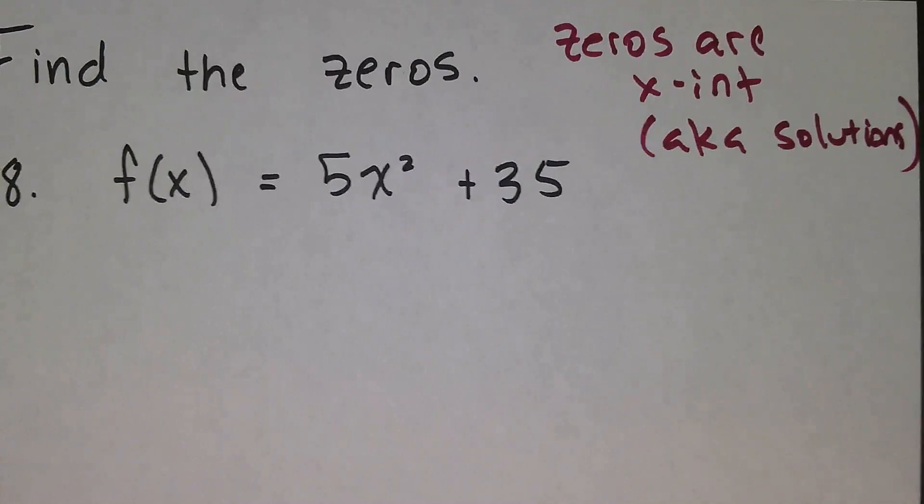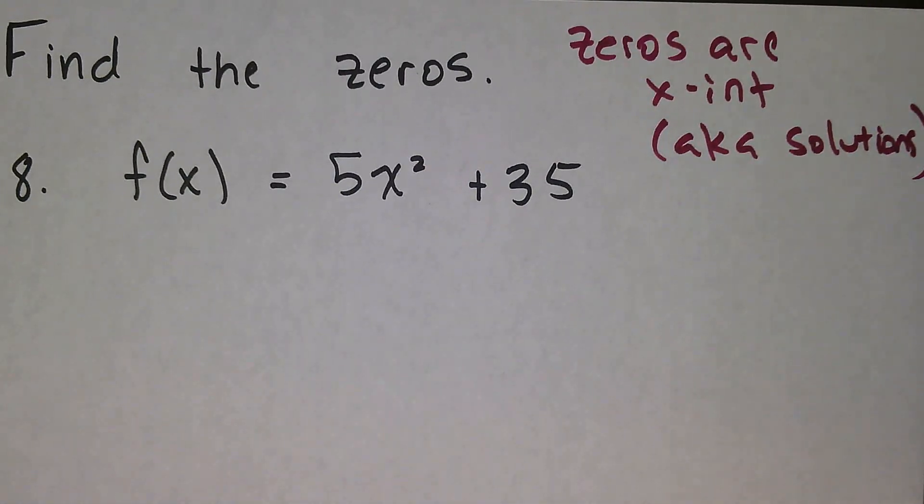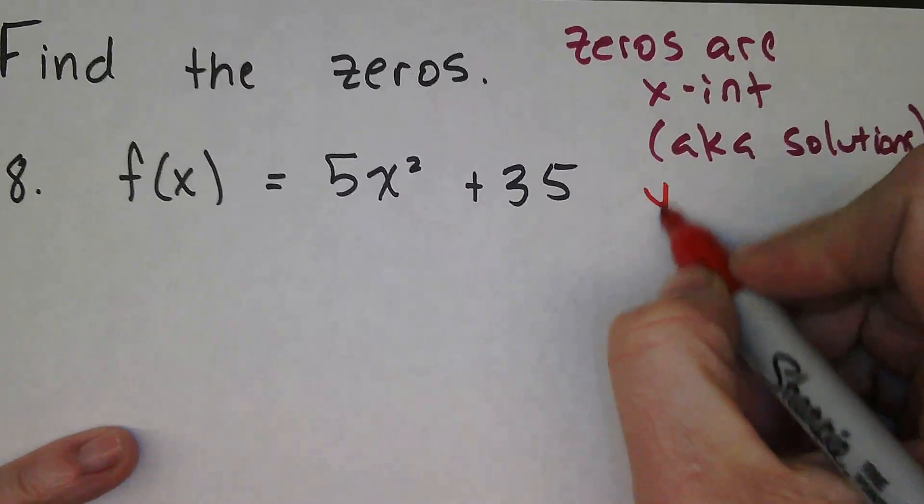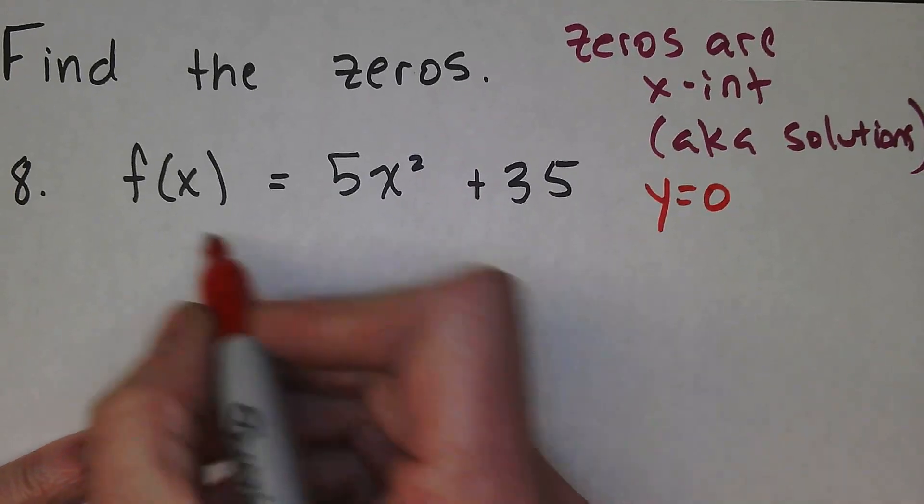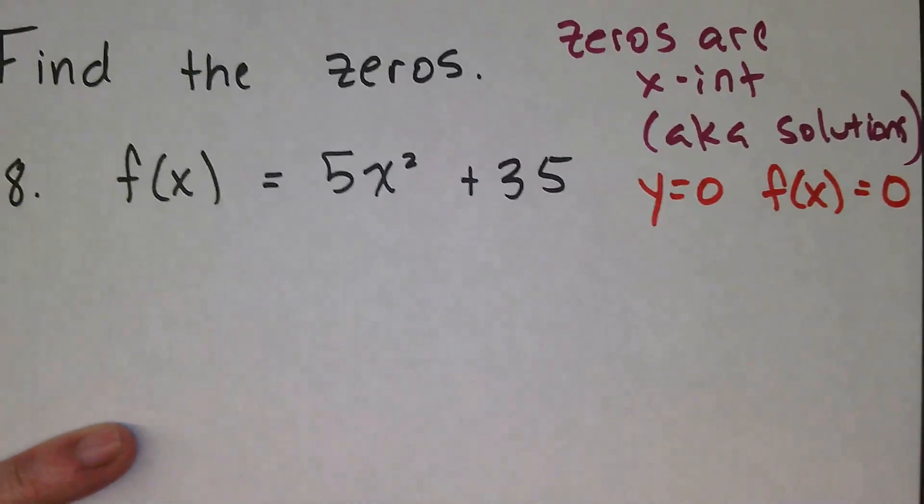What's important about knowing they are the x-intercepts is that when they are the x-intercepts, the y-value is zero. Or in this case, since it's in function notation, the f(x) value is zero.